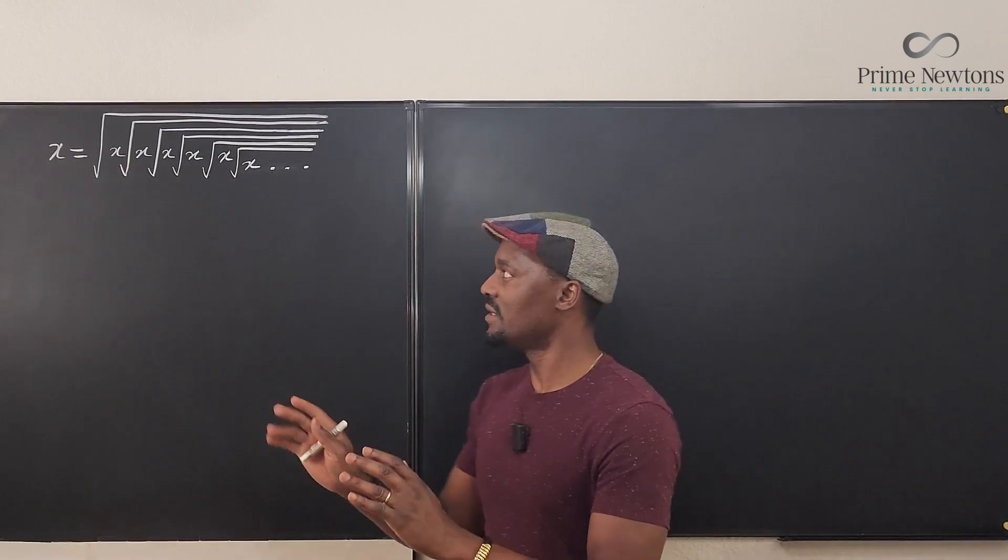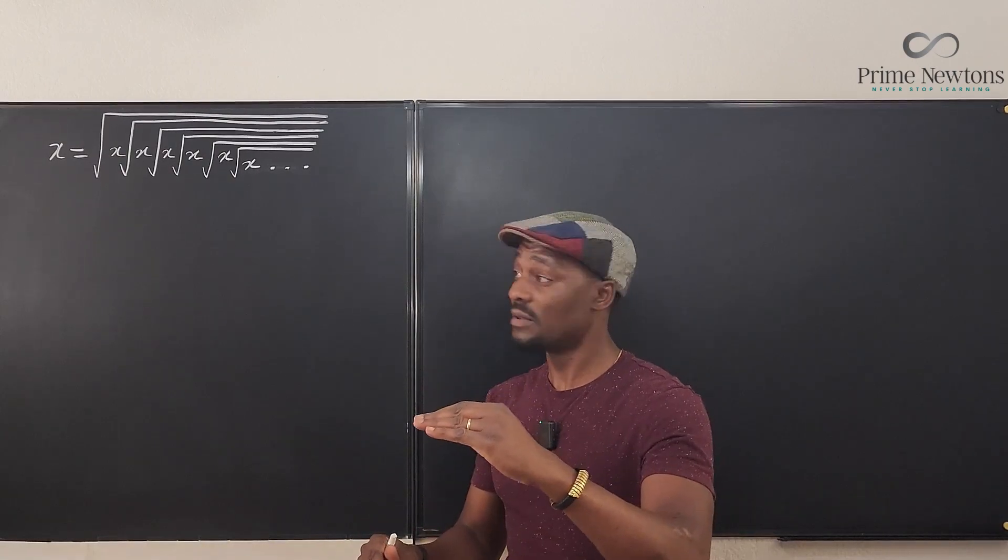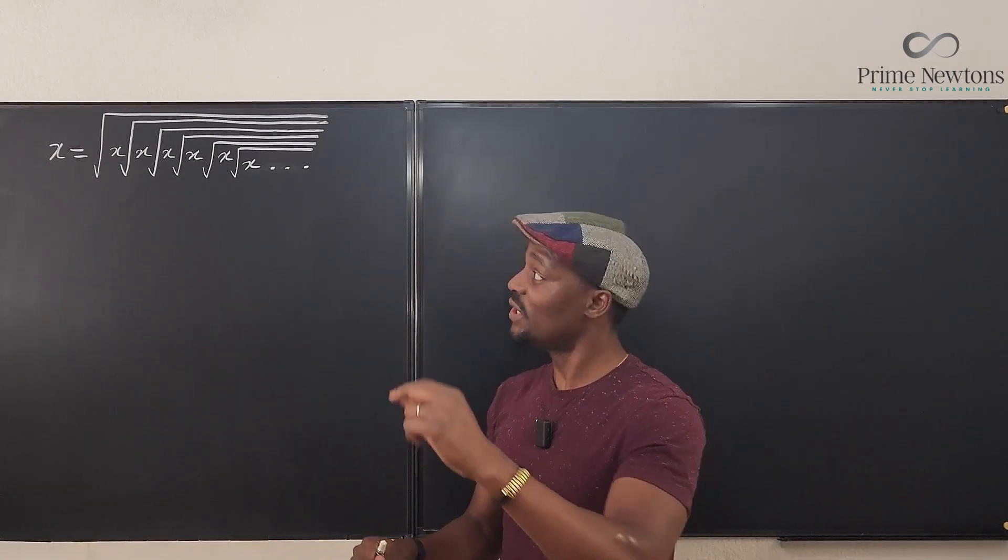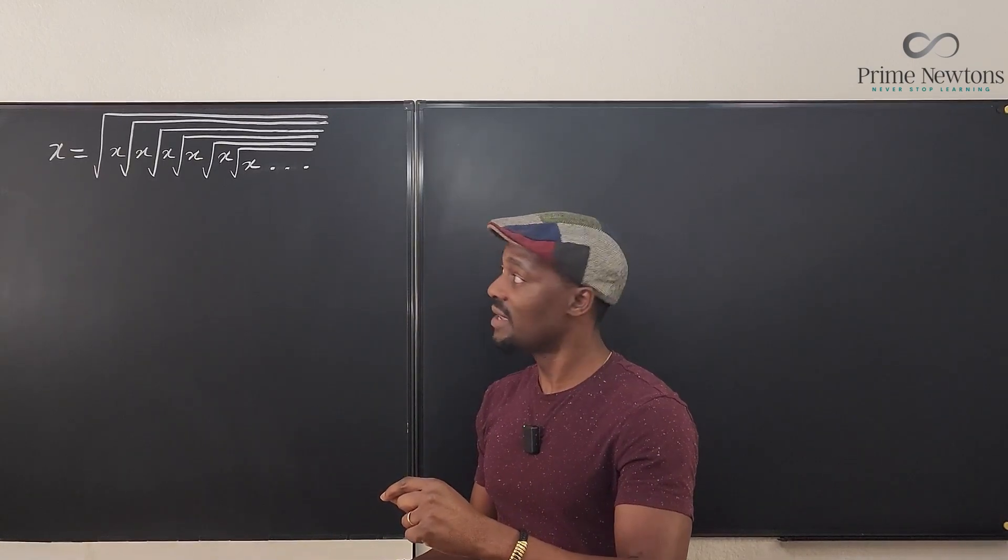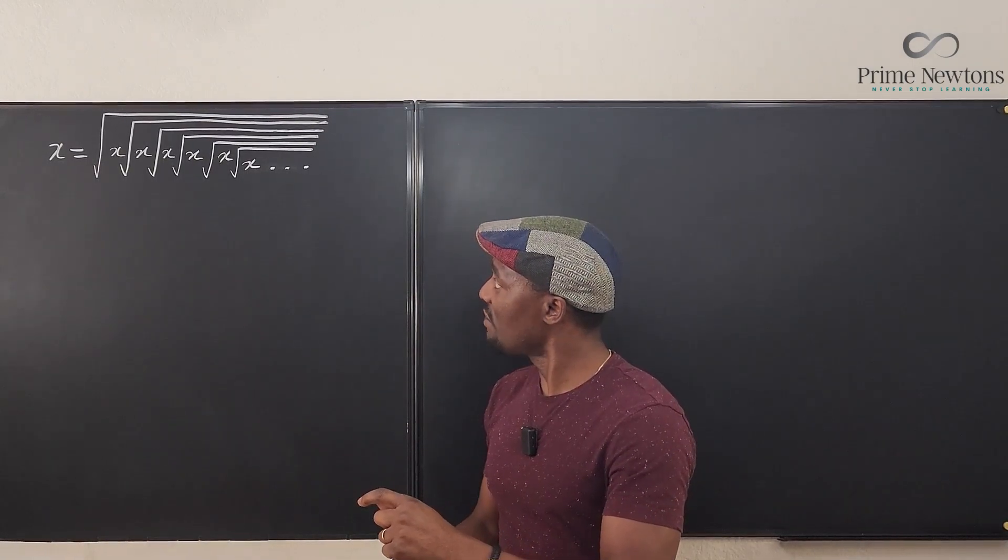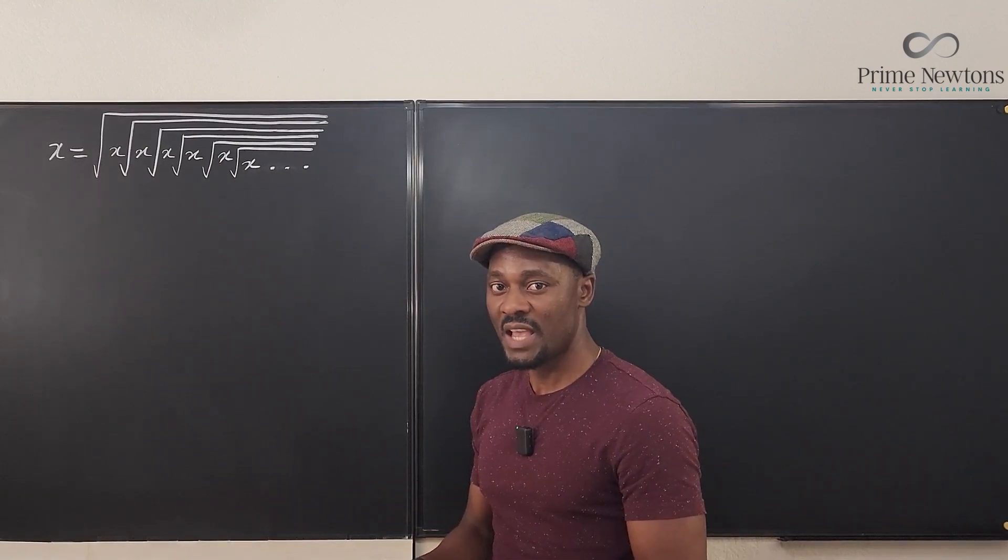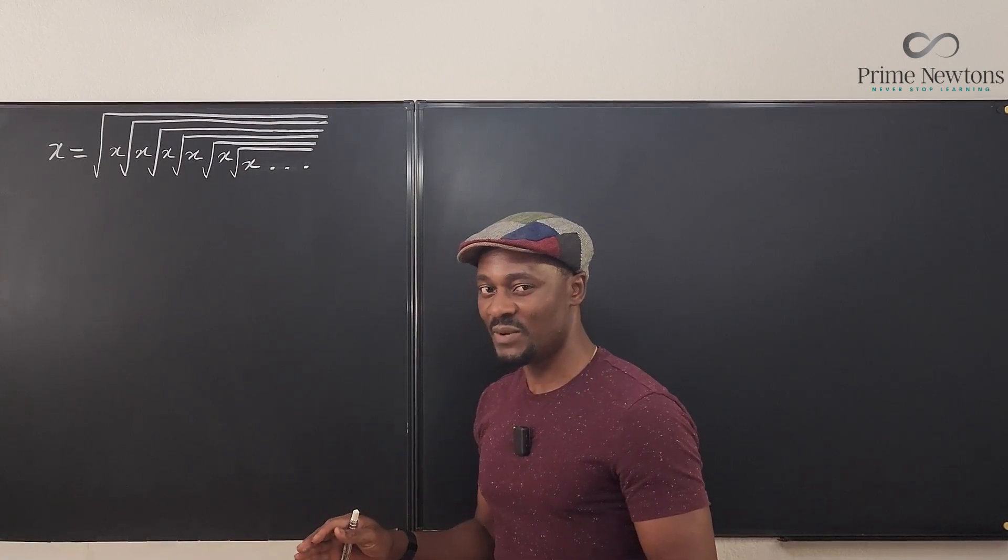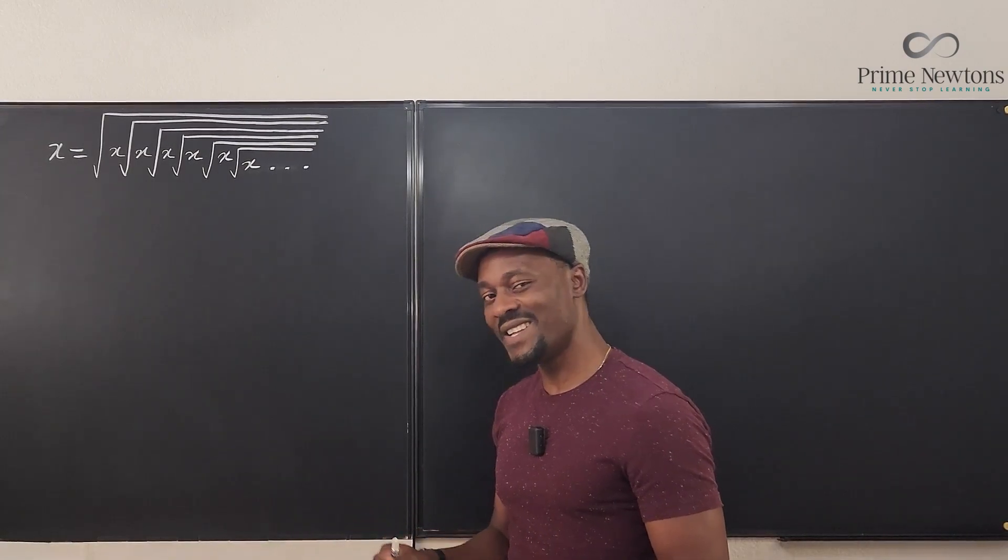I want you to look at this as the square root of x times the double square root of x times the triple square root of x times the quadruple square root of x. If you can see that, then this is going to be very easy for you to understand. Let's get into the video.